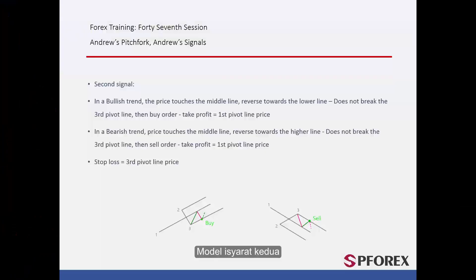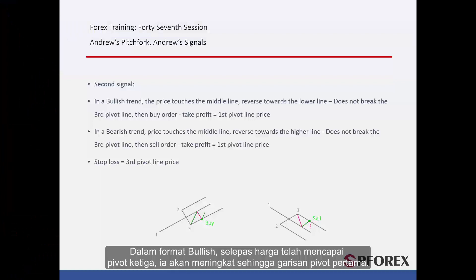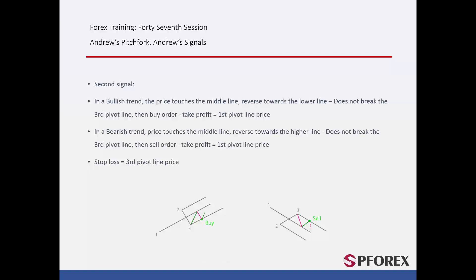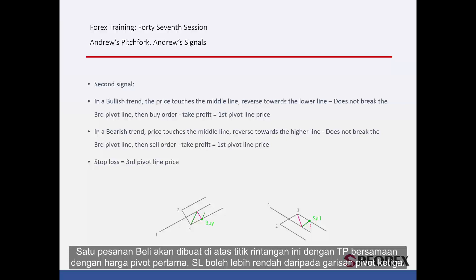The second signal model. In a bullish format, after price has reached the third pivot, it will increase until the first pivot line. Then the price decreases towards the third pivot line again. But just before touching this line, it will change its direction. A sell order can be placed on this reversal point with TP equal to the first pivot price. SL can be lower than the third pivot line.